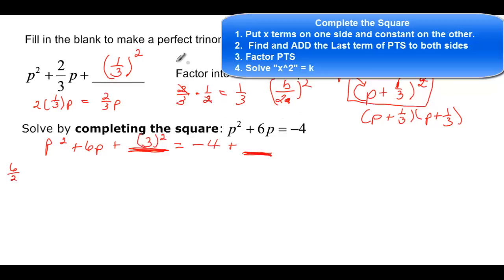My b is 6 and I divide that by 2 and that gives me 3, but I have to square that 3. This 1 third quantity squared was b over 2 quantity squared. So 6 over 2 is 3, 3 squared is 9. So it's p squared plus 6p plus 9 is equal to, I have to add 9 to both sides. So negative 4 plus 9 will be 5.